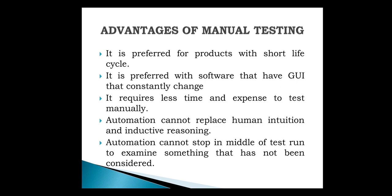Automation cannot replace human intuition and inductive reasoning — the kind of intuition a human gets is not possible in automation testing. Automation cannot be stopped in the middle of a test run to examine something not previously considered. In automation, it stops only when all test cases are executed. But in manual testing, you can stop in the middle and consider something not already planned.